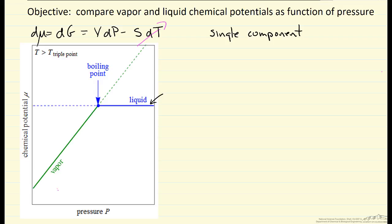So at low pressure we have vapor, and then at high pressure we have liquid, and that point, that transition point, at a given temperature, that's the boiling point, the boiling pressure.